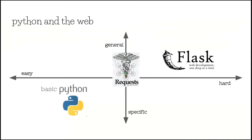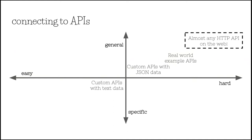So in terms of connecting to those APIs using the requests library, we started off with simple custom APIs with text data. We didn't want to overwhelm them at the start by making them get data that was complicated and they had to process. We just allowed them to use the requests library to get the text data.